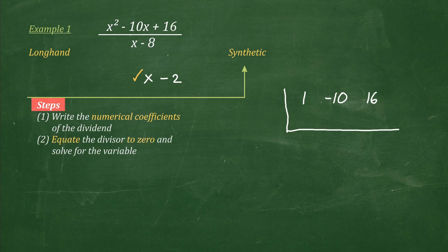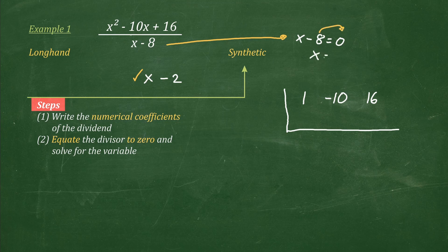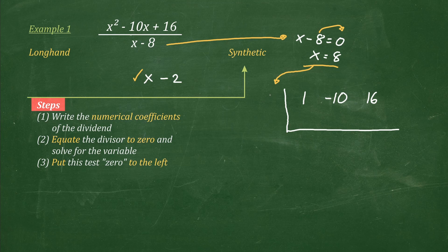Step 2: equate the divisor to 0 and solve for the variable. Meaning, x minus 8, equate to 0, and then solve for the variable x by transposing negative 8 to the right side. So, x is equal to 8. This is what we call the test zero. Next, step 3: put this test zero to the left — place this 8 to the left side.